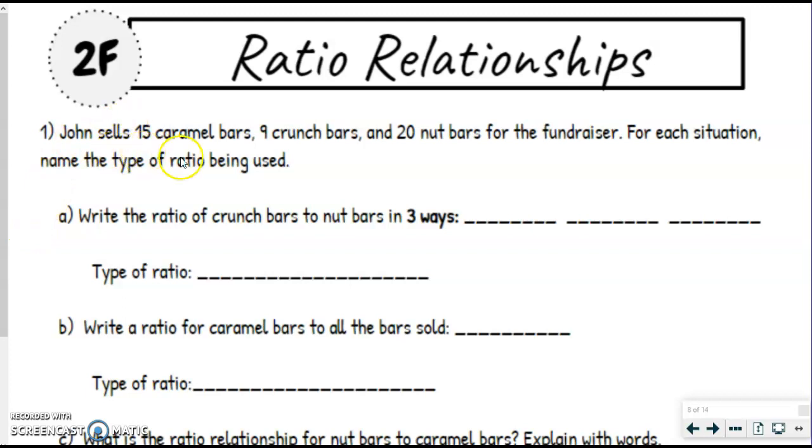So John sells 15 caramel bars, nine crunch bars, and 20 nut bars for the fundraiser. For each situation, name the type of ratio being used. So we've got write a ratio of crunch bars to nut bars in three ways. So remember, since crunch bars comes first, that's the number we have to have come first, which would be nine, because I'm looking up here, nine crunch bars.